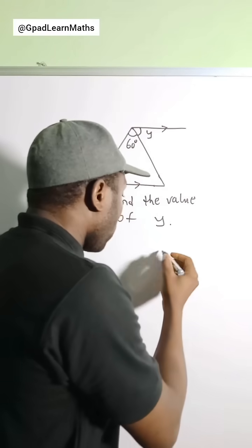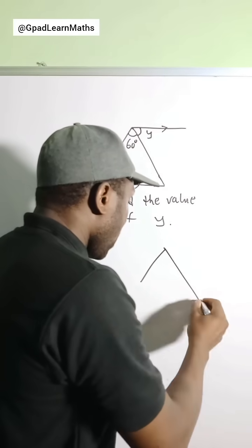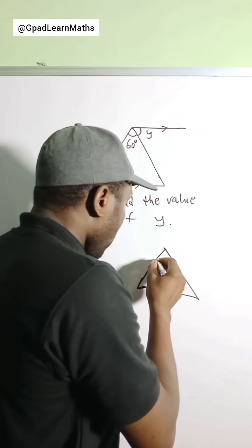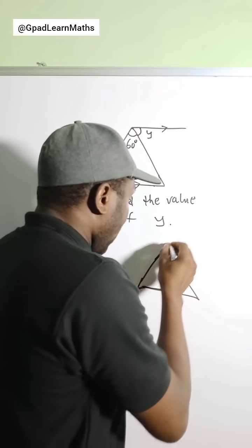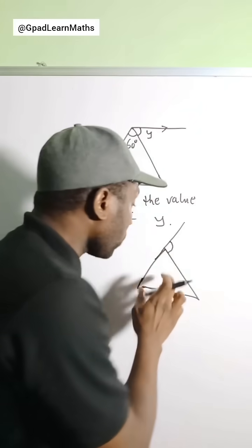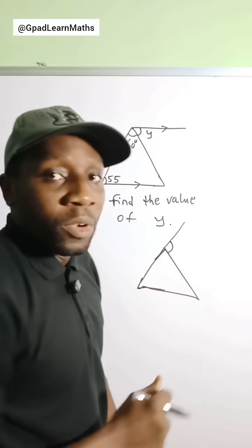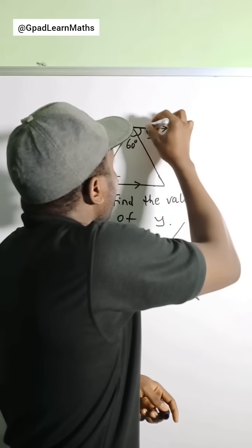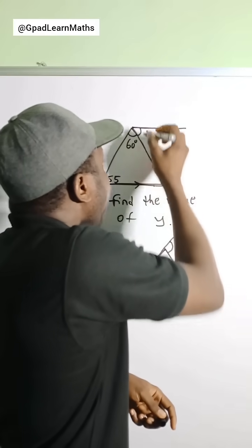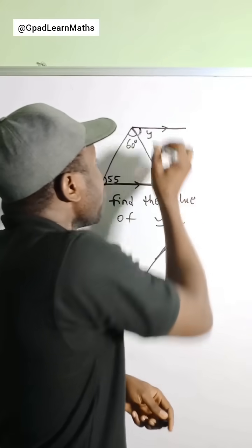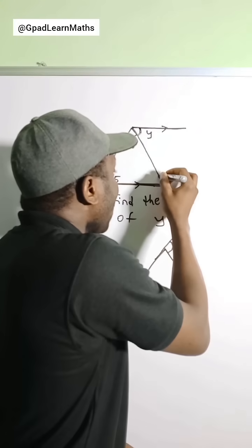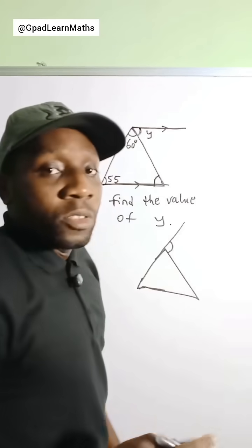For instance, if you have something like this — this is a triangle — if I extend this line, then this angle here becomes an exterior angle to this triangle. Now, I have two parallel lines here and this is a transversal.